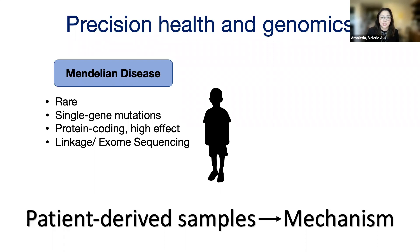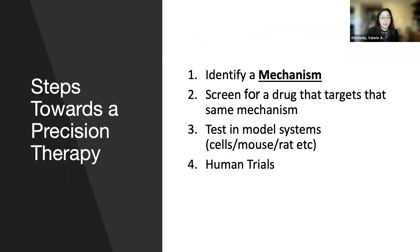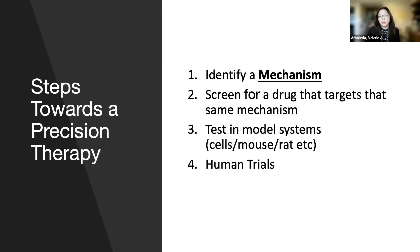We're going to talk about Mendelian disorders and how we use patient-derived samples to get at mechanism. Within UCLA and a number of other institutions, there's a real push towards precision health and precision therapies. Most people think about this in the cancer context — if you see a gene mutation, you try to target either that mutation or some downstream effect. The most critical piece to develop a precision therapy is to identify a mechanism.